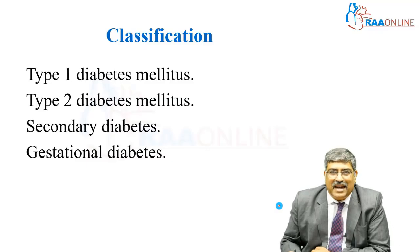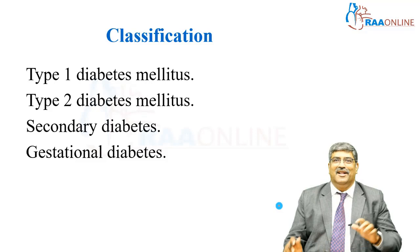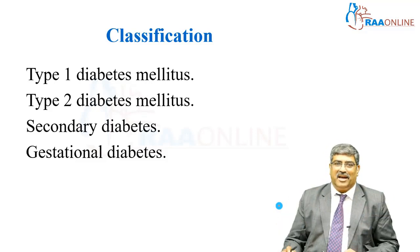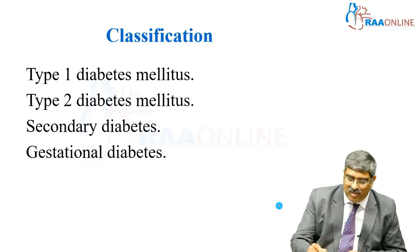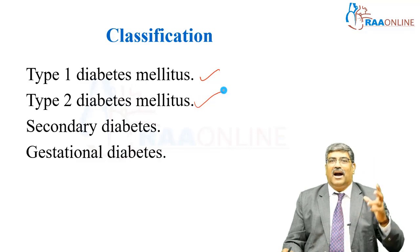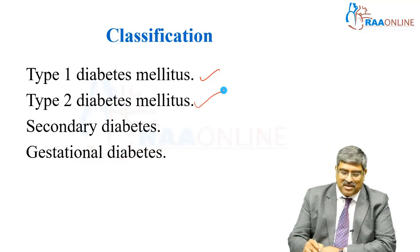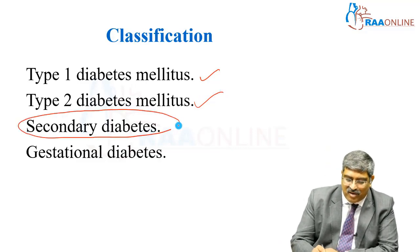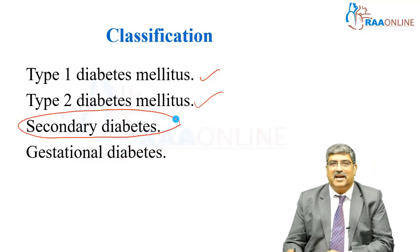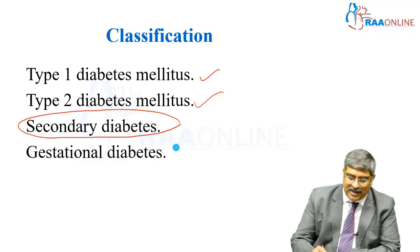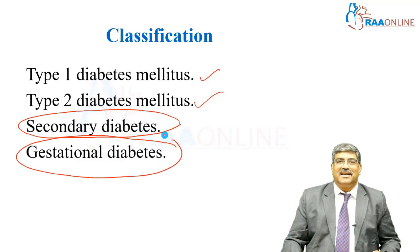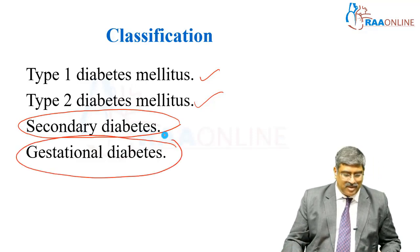Coming to the classification, there are four main classes of diabetes: type 1, type 2, diabetes secondary to other etiology which is secondary diabetes, and diabetes which occurs in pregnancy which is called gestational diabetes.